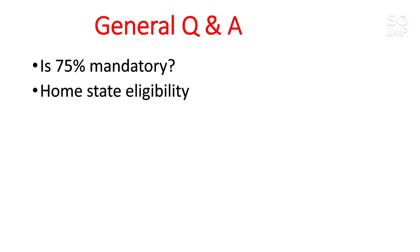What is the home state eligibility? Listen carefully because this is very important. Suppose you gave your 10th exam from State A and you live there, but you appeared for Class 12th from State B — then State B will be your home state. It doesn't matter where you live or where you did your 10th; your home state will be the state in which you appeared for the Class 12th examination. And if you did your Class 12th in State A but are appearing for improvement in State B, your home state eligibility will still be State A — the state where you first attempted Class 12th.